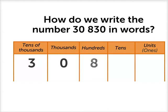Three, zero, eight, three, zero. How many thousands do we have this time? We have three tens of thousands and no thousands. So three, zero, makes 30. There are 30,000.